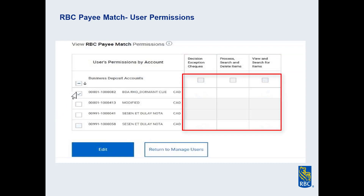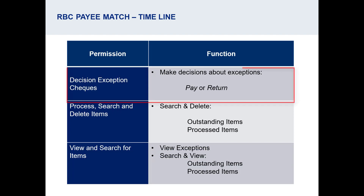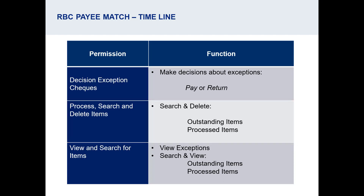Use the checkboxes in the chart to indicate the abilities of this user. The three permission columns are detailed here. Each permission gives the user a different ability. The first is Decision Exception Checks — a user with this role can make decisions about items flagged as exceptions. Then there's Process, Search, and Delete Items — a user with this role can use the search feature to view details of outstanding and processed items, and will have the ability to delete records of outstanding items. The last option is View and Search for Items, which is ideal for users who have view-only access to Payee Match. This role allows the user to see exceptions but not make decisions, and search items but not delete them.